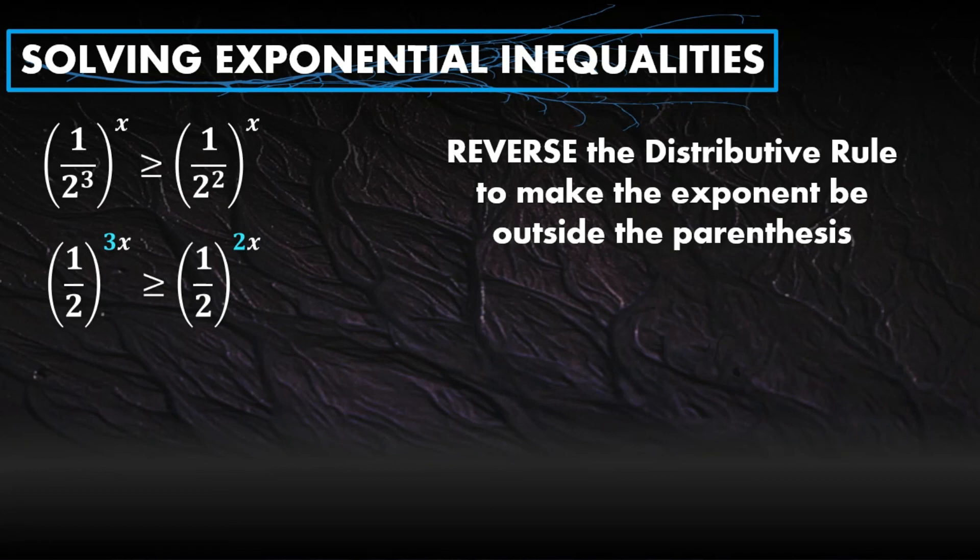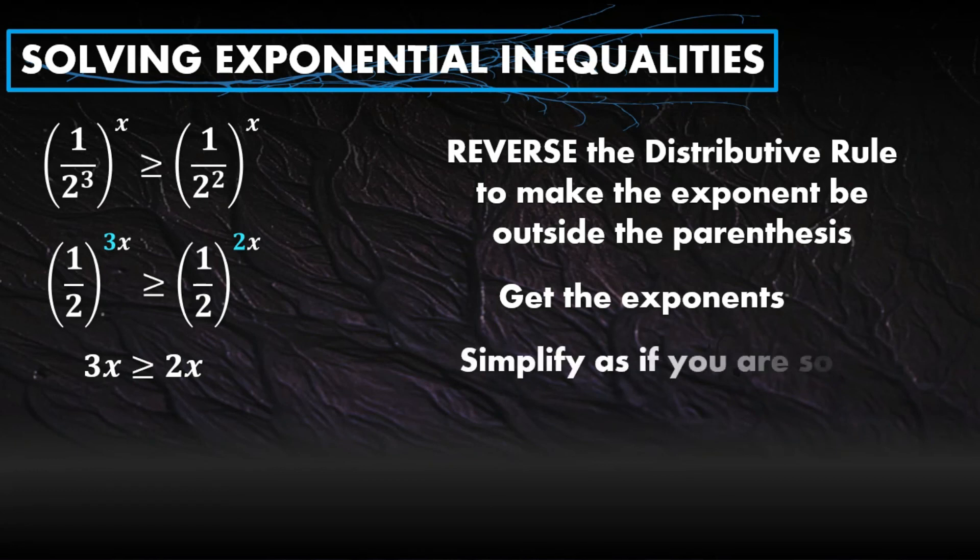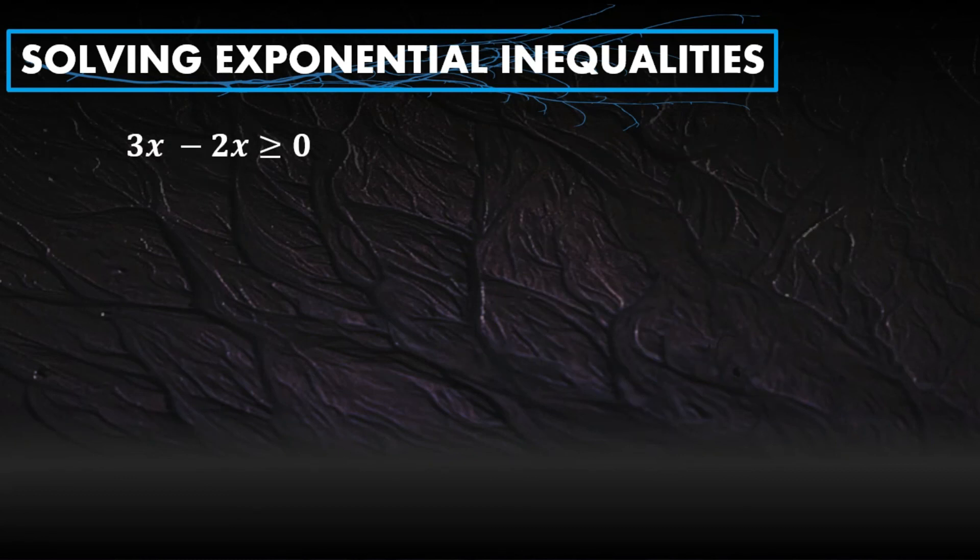Anyway, let's move on with the solution. Since we have the same base as 1/2, we get the exponents: 3x greater than or equal to 2x. After that, solve this as if you're solving an equation. Meaning, transpose 2x to the other side, which becomes 3x minus 2x greater than or equal to 0. Then simplify: x greater than or equal to 0.